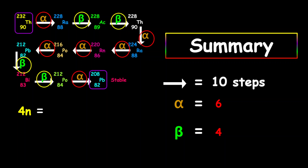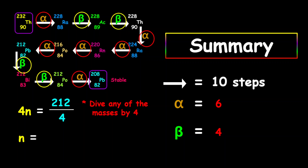Now let's talk about the 4N series. To determine if this is a 4N series, you can take any of the mass numbers within the series and divide it by 4. For example, taking 212 and dividing by 4, what you should get is an integer — a whole number with no remainder. 212 divided by 4 gives us 53 with no remainder, so therefore it is simply a 4N series.